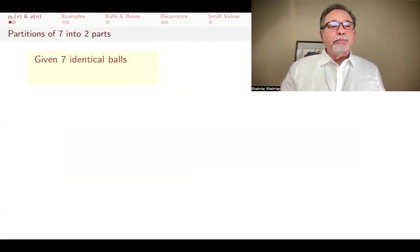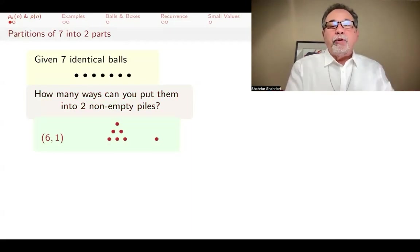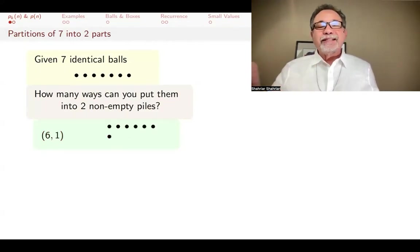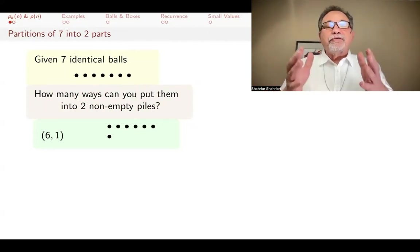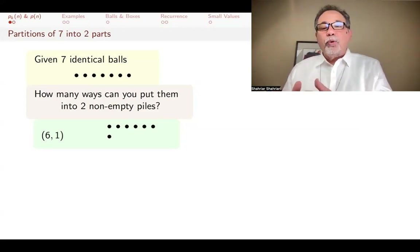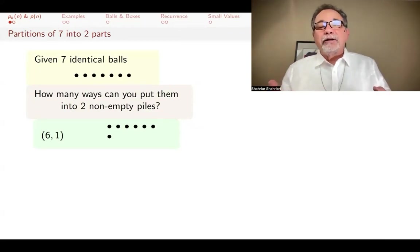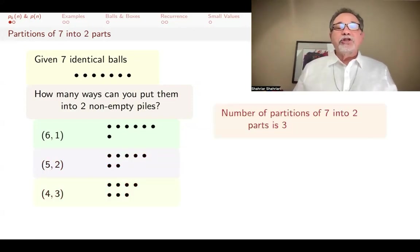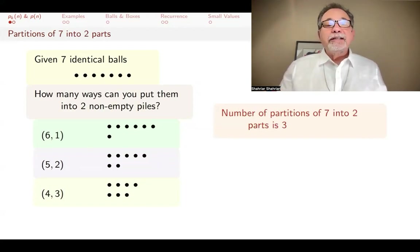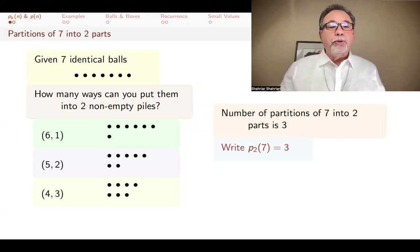Let's say you have seven identical balls. How many ways can you put them into two non-empty piles? For example, you can put six of them in one pile and one in another. As is common in combinatorics, we write the six as one row and the one as a separate row. This is the partitioning of seven into six and one — a pile of six and a pile of one. The piles are indistinguishable in the sense that there's no first and second pile; they're just piles. I could also put them in five and two, or four and three. The number of partitions of seven into two non-empty parts is three, and we write that as p of seven sub two.